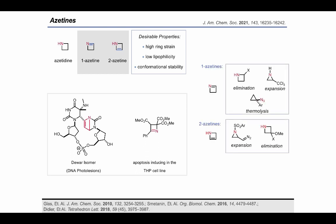Some traditional methods to make 1-azetines include beta-elimination, aziridine expansion, and thermolysis. 2-Azetines can also be accessed through ring expansion and elimination. However, these methods require more complex starting materials or harsh conditions which limits their general applicability.